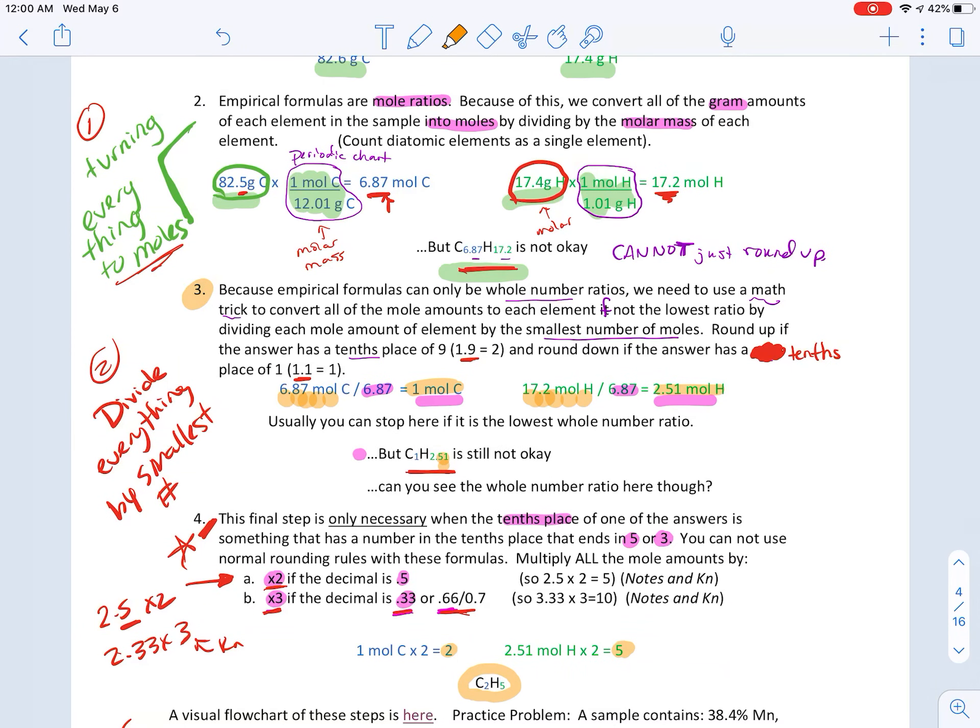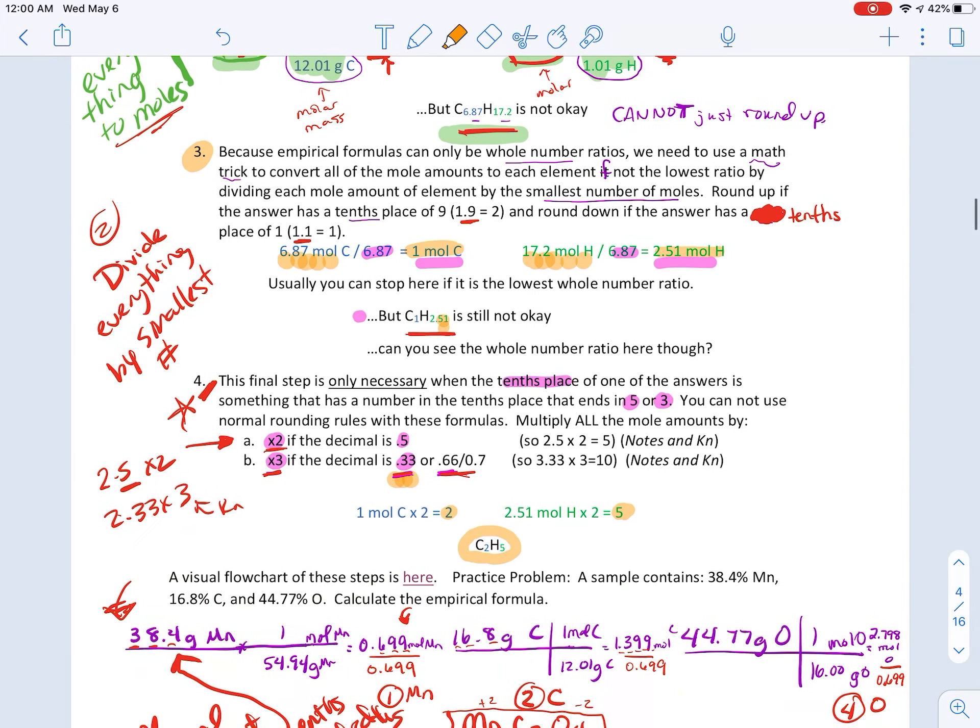You've got to double-check that whole number ratio. So if the decimal is 0.5, it's times 2. And then if the decimal is 0.33, it's times 3. So you're going to multiply, because it's 0.5. You're multiplying both of the numbers, the 1 and the 2.5, times 2. And that's how you get your subscripts.